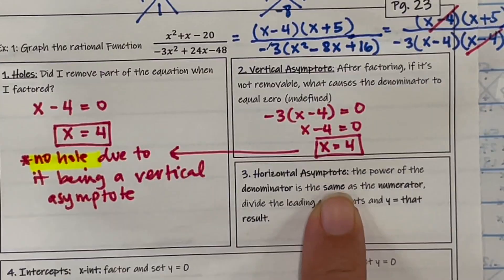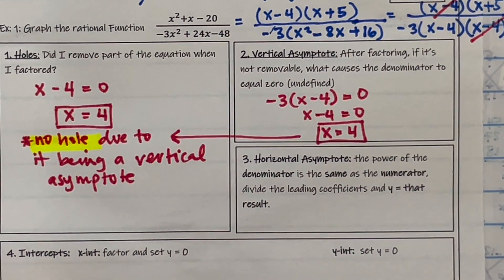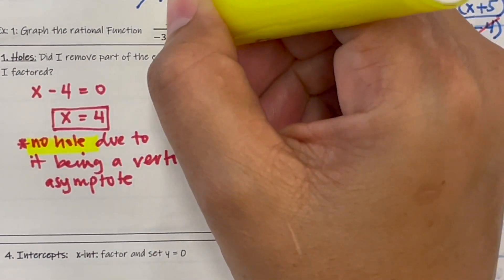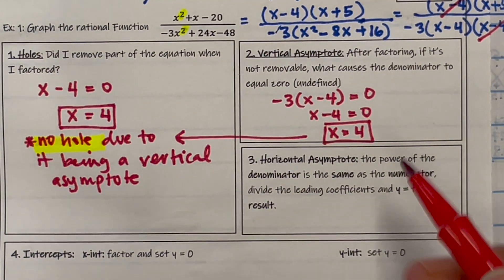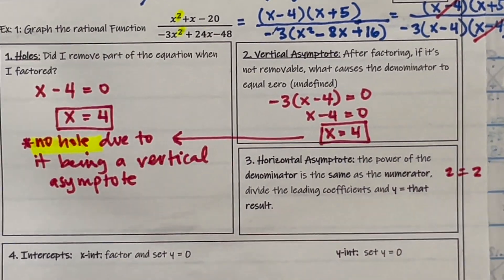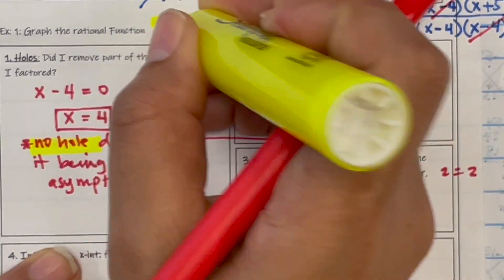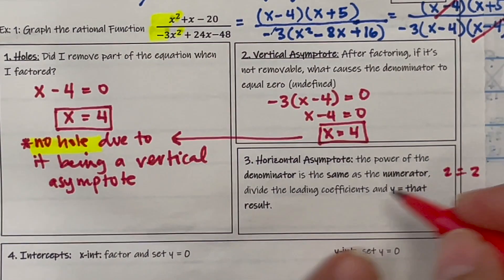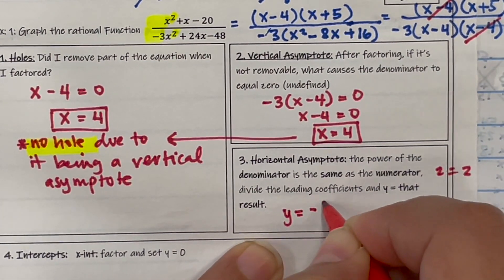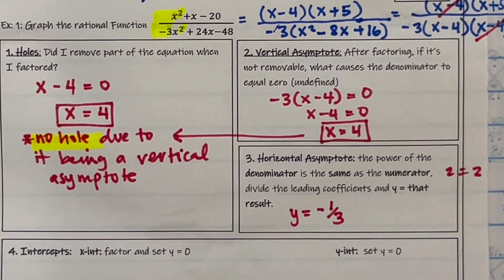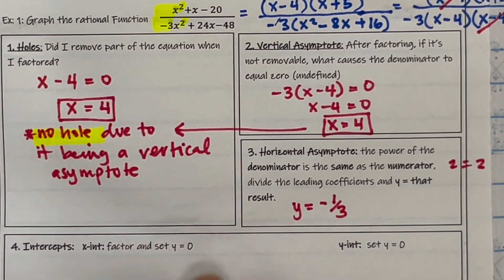Next step, horizontal asymptotes. I can see the numerators, excuse me, the highest powers are exactly the same. 2 is equal to 2. And so remember when they are exactly the same, you take the coefficients of the highest powers of positive 1 over negative 3. So that's going to simplify to negative 1 third.